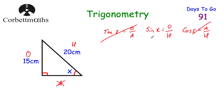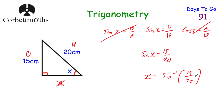To find the size of this angle, we use: sine X equals opposite over hypotenuse, so sine X equals 15 over 20, which is 0.75. This angle is obviously not equal to 0.75 — that's the sine of the angle. So to get rid of the sine, we do the inverse sine. X equals inverse sine of 15/20. On our calculator, press shift, then sine, then type in 15 over 20 and press equals. We get X equals 48.59 degrees to two decimal places.